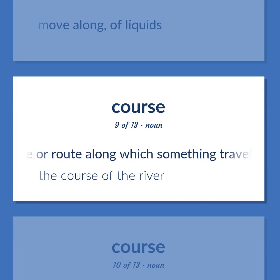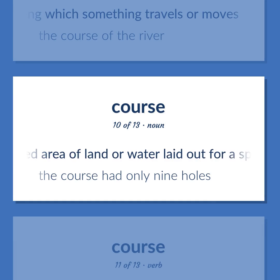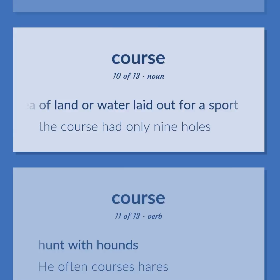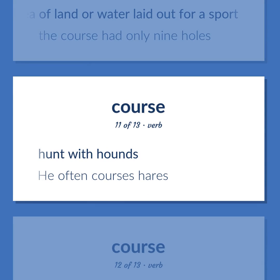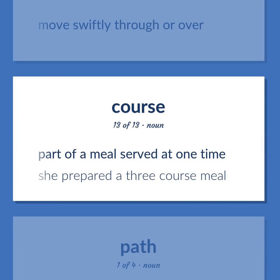Course: A line or route along which something travels or moves — the course of the river. Facility consisting of a circumscribed area of land or water laid out for a sport — the course had only nine holes. Hunt with hounds — he often courses hares. Move swiftly through or over. Part of a meal served at one time — she prepared a three-course meal.